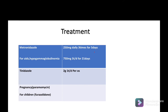Treatment for Giardia lamblia is metronidazole 250 mg three times per day for five days. For hypogammaglobulinemia or immunodeficiency patients, the dose is 750 mg three times per day for 21 days. Tinidazole is more effective than metronidazole, taken as a 2-gram single dose orally. For pregnancy, paromomycin is used. For children, furazolidone can be used.